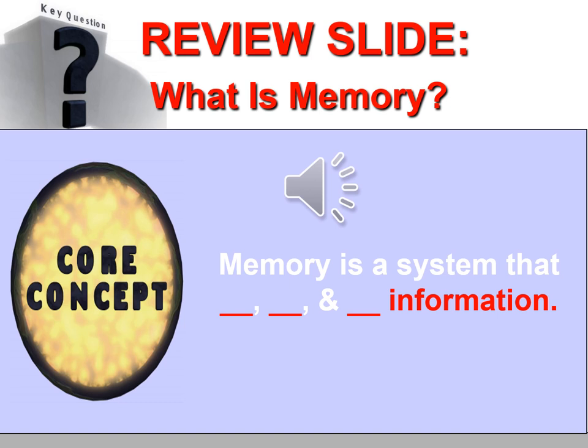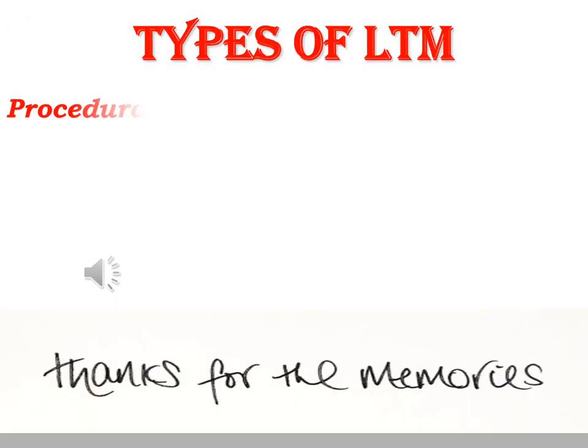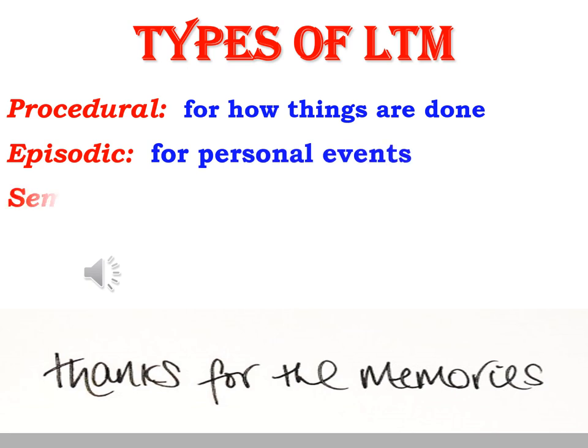So again, we'll define memory as the system that encodes, stores, and retrieves information. Now let's consider the three types of long-term memory, starting with procedural.